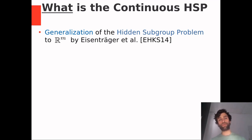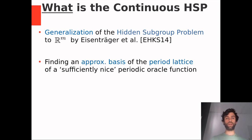Another subtle difference between the continuous hidden subgroup problem and the ordinary hidden subgroup problem is that in the continuous version, the oracle function is allowed to be quantum. The output might be a quantum state. So to be precise, the continuous hidden subgroup problem consists of finding an approximate basis of the period lattice of a sufficiently nice periodic oracle function on r to the power m. And this oracle function is allowed to be quantum.